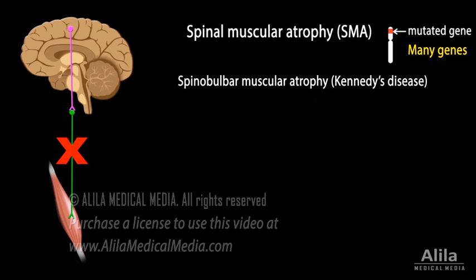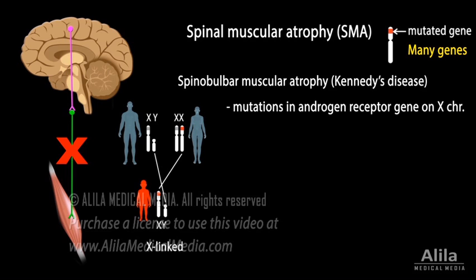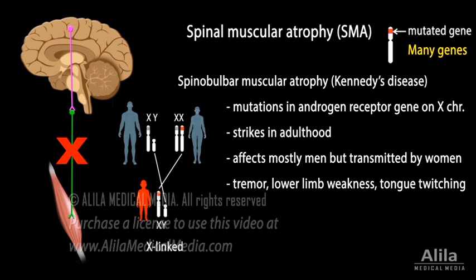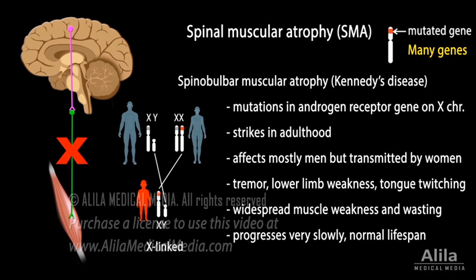Spinal bulbar muscular atrophy, or Kennedy's disease, is a form of SMA caused by mutations in the androgen receptor gene on the X chromosome. This disease typically strikes in adulthood and affects mostly men, but is transmitted by their mothers and daughters who carry the mutation. Early symptoms include tremor, lower limb weakness, and tongue twitching. Late symptoms include widespread muscle weakness and wasting. The disease progresses very slowly, with most patients having a normal lifespan.